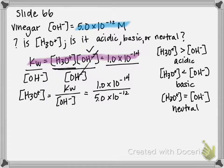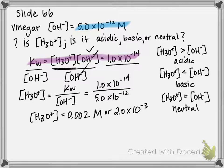If we divide those two numbers by one another, we get that H3O+ equals 0.002 molar, or in scientific notation, 2.0×10^-3.